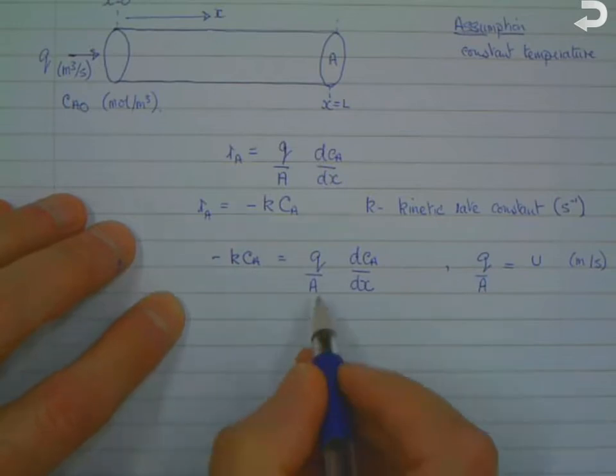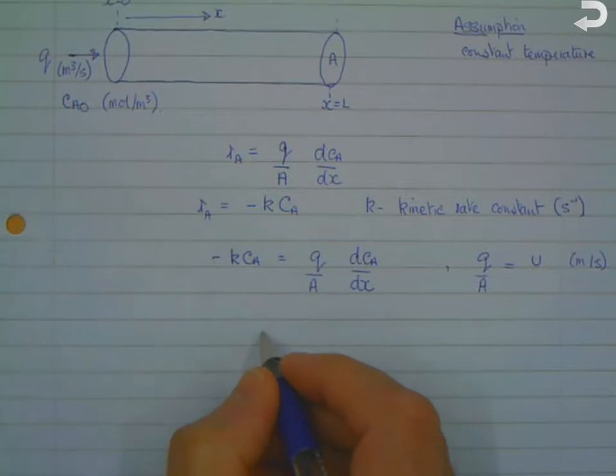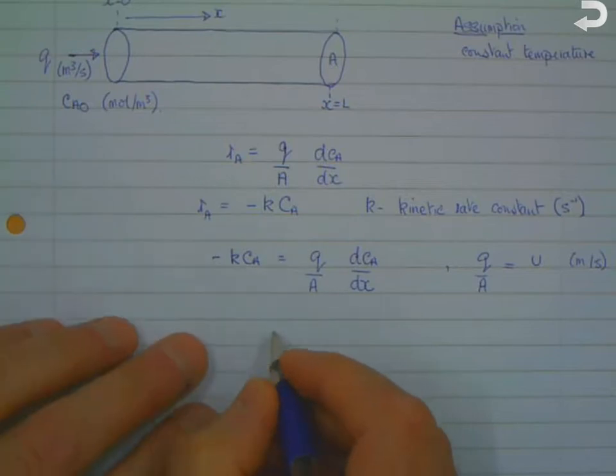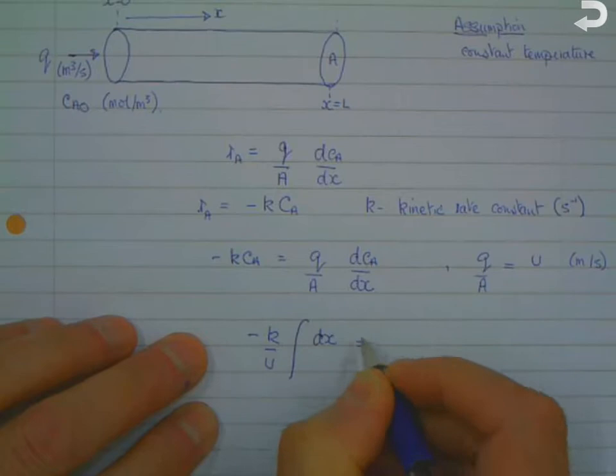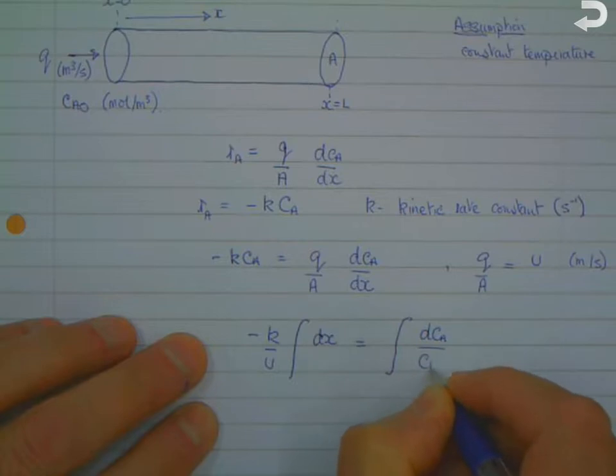And if we do that, if we substitute Q over A by U, we can start to rewrite this as an integration. And we get minus K over U, the integral of dx is equal to integral dCA over CA.